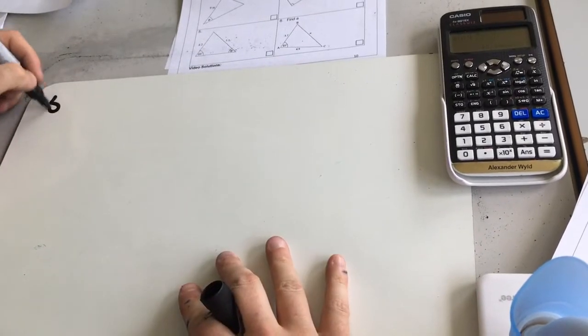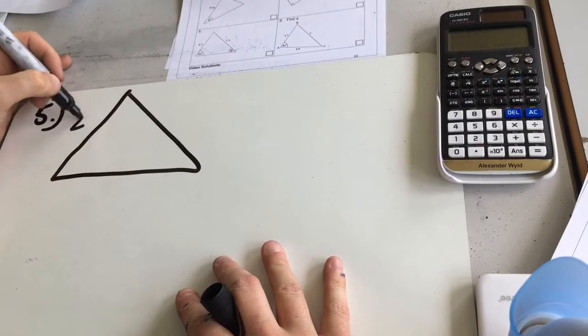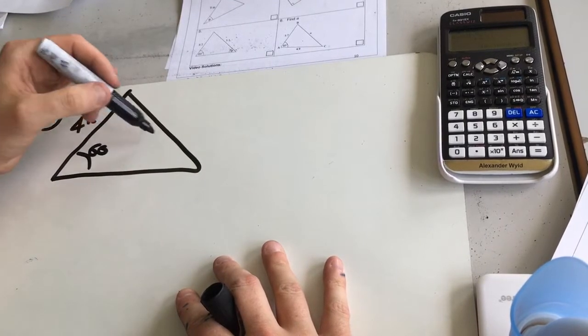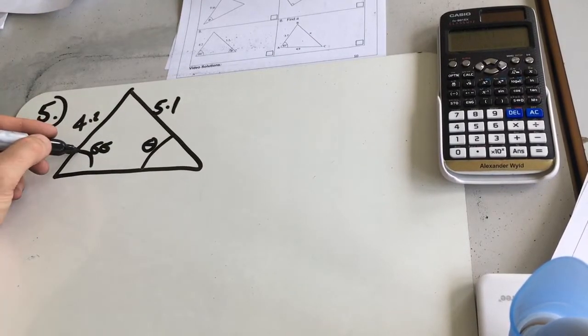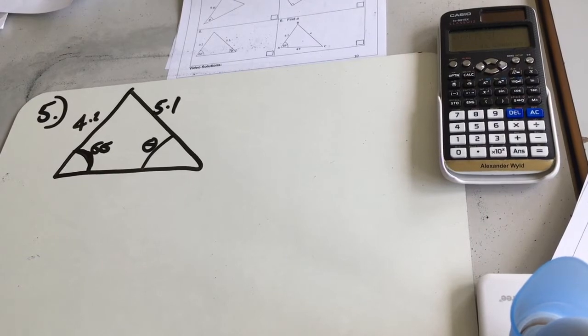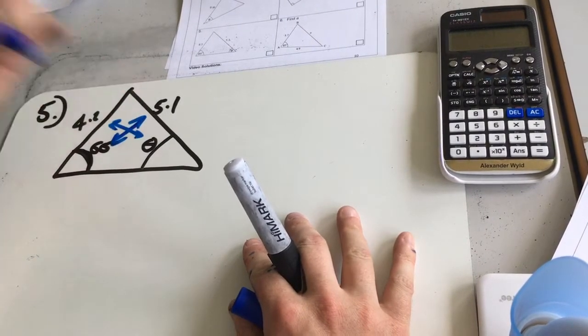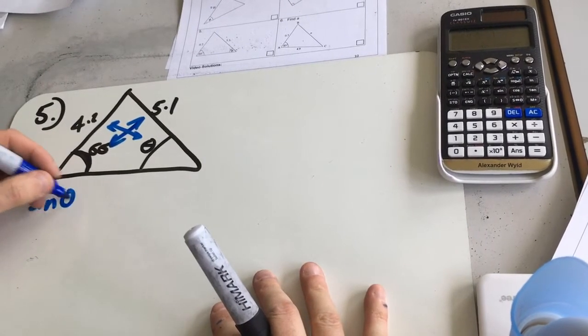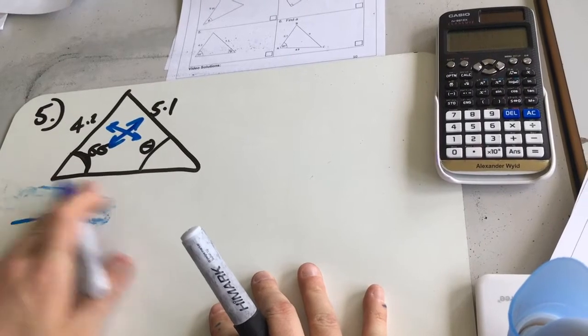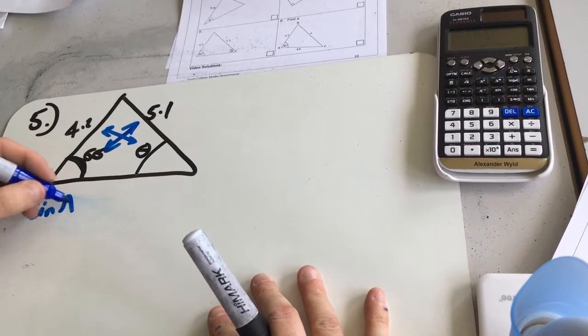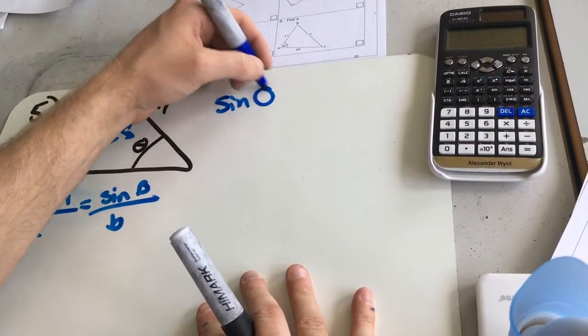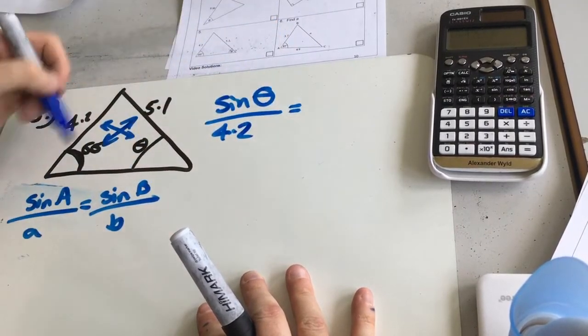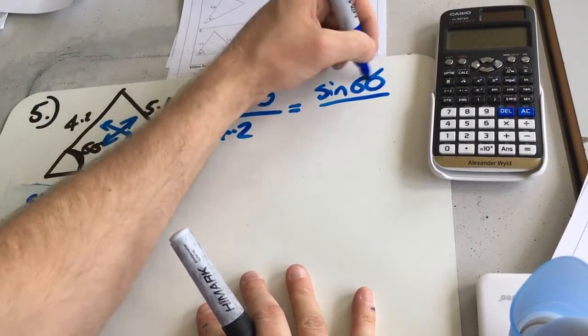So question 5. So we no longer have a right angle triangle. 4.2, 66, theta, and 5.1. So we want to try and find theta, and we know these angles. Now once you've learned the sine rule and the cosine rule, it's quite clear that this is going to be a sine rule question because we have a pair there and a pair there. So when you've got opposite pairs, it's a sine rule. So we get sine theta over, even better, let's do A's and B's. Sine A over A equals sine B over B. So sine theta over 4.2 is going to be equal to sine 66 over 5.1.